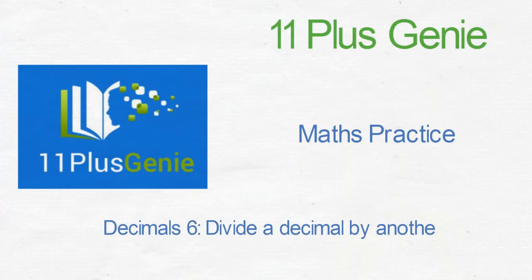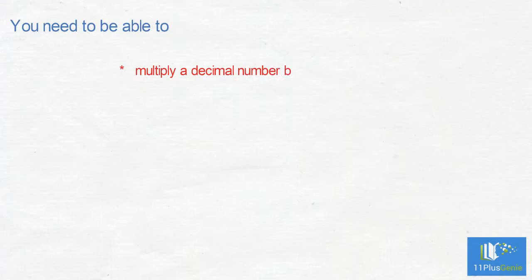Divide a decimal by another decimal. You need to be able to multiply a decimal by 10 and 100 and divide a decimal by a whole number.